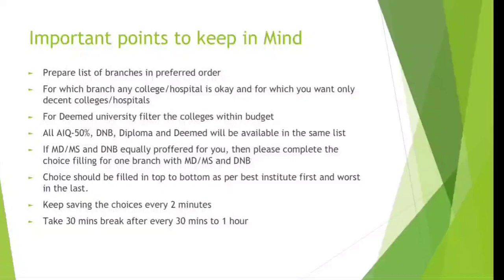For which branches you don't want to go to private colleges, and for which branches you want a decent college — you need to segregate colleges into categories: top institutes, better than average, average, below average, and poor institutes. This way when you do the choice filling you just take the name of the college and place it. All lists should be ready in hand because if you are thinking while entering — whether to put this college or not — the choice filling is so lengthy it creates a high chance of manual error, and that might be a risky approach. You could end up getting a mediocre college or making a big mistake.